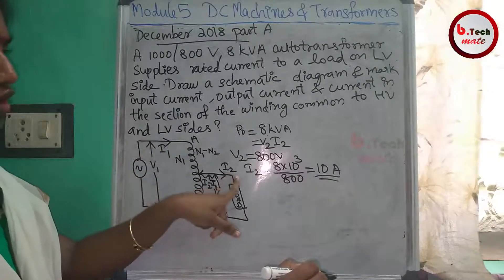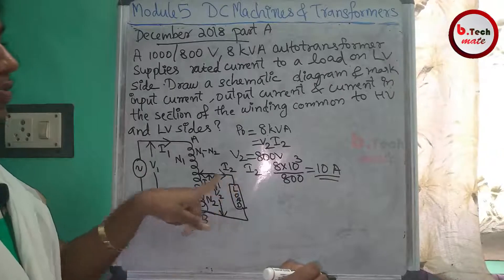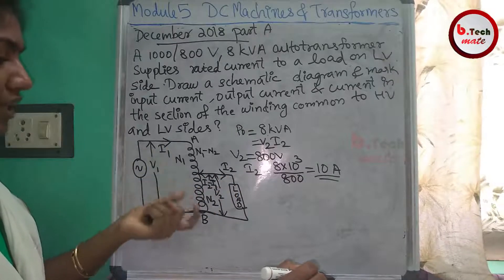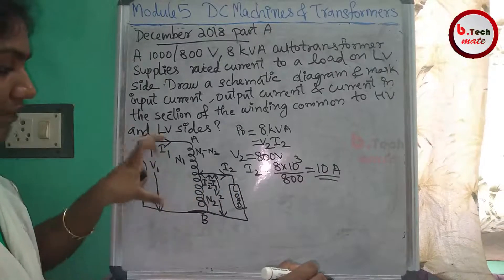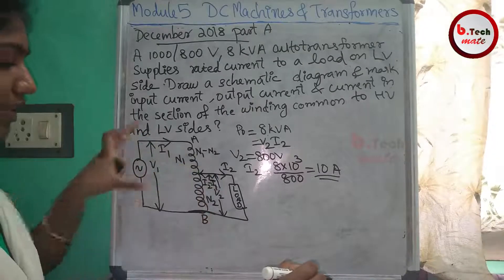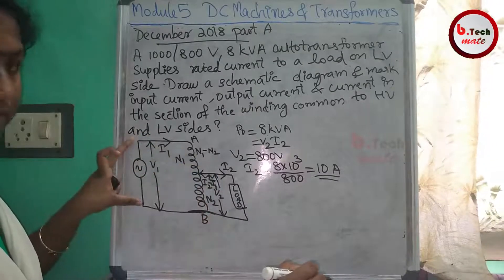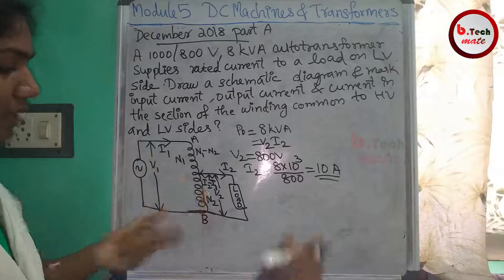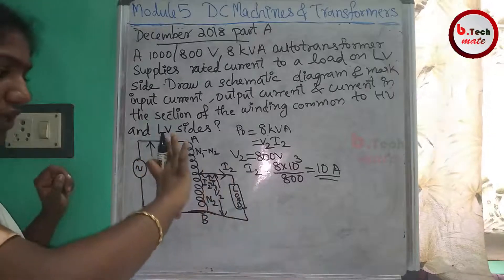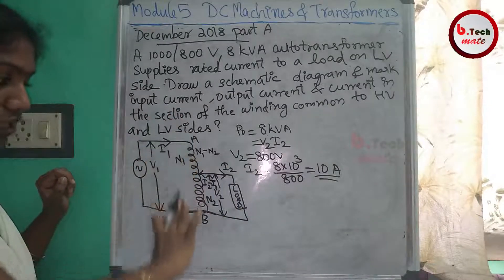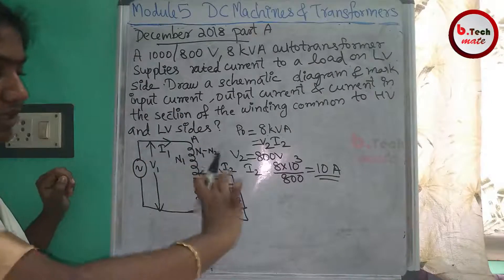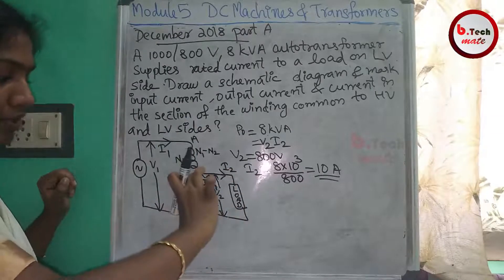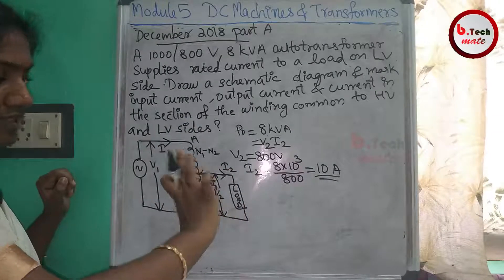We have shown the input current and output current I2, and the current in the section of winding common to the LV and HV sides. The LV side and HV side are identified — this is the full LV side and this is the full HV side.